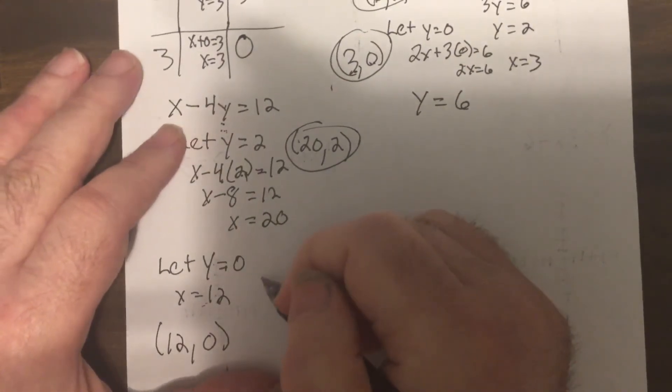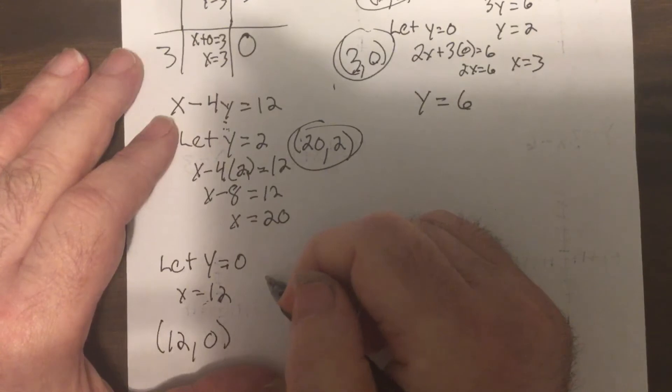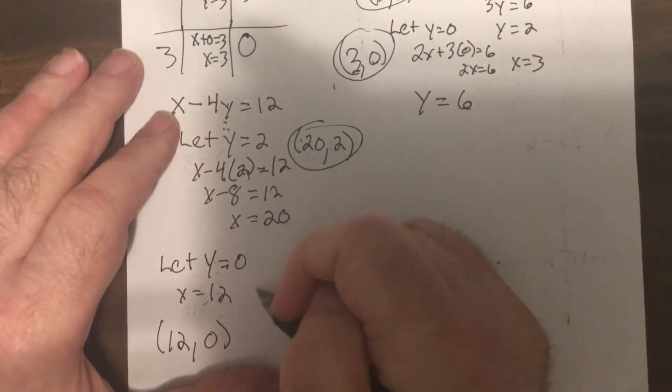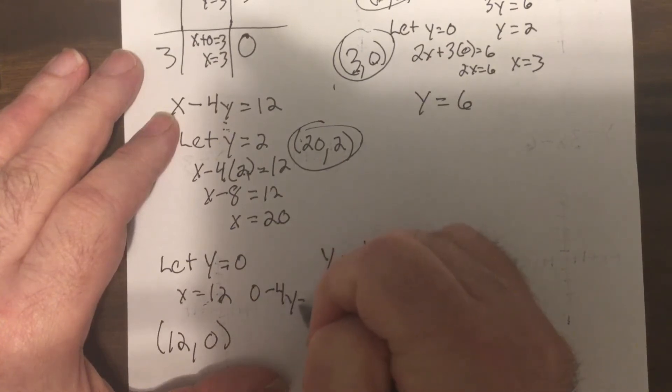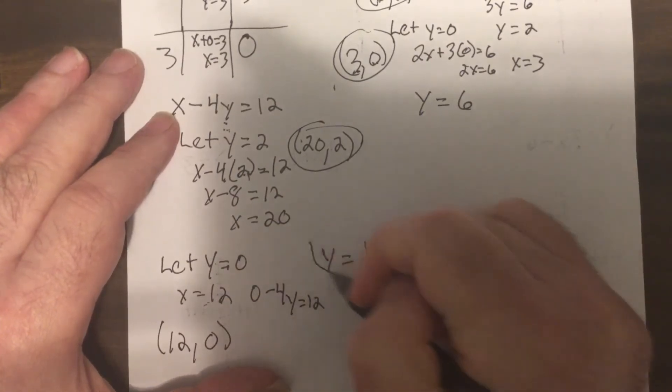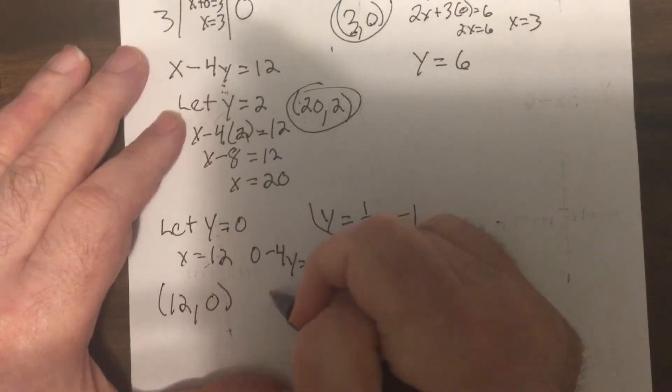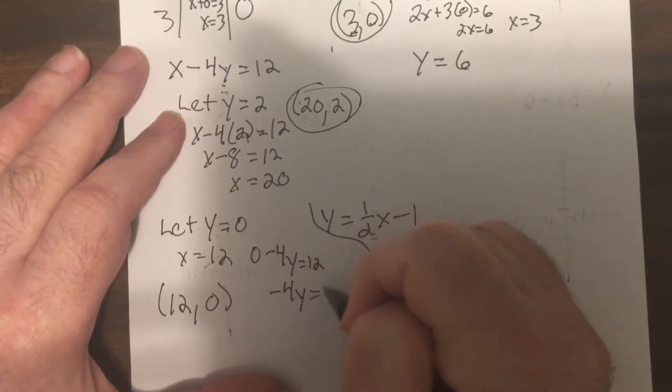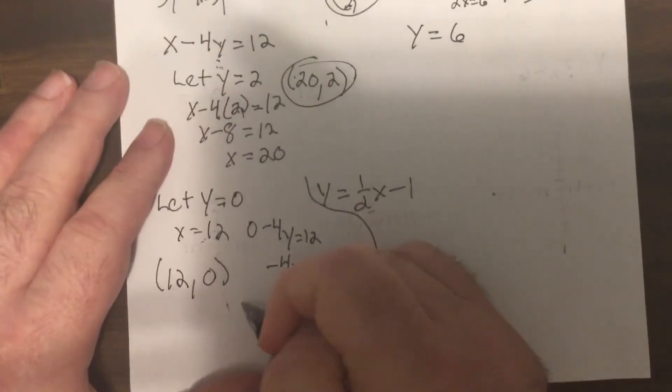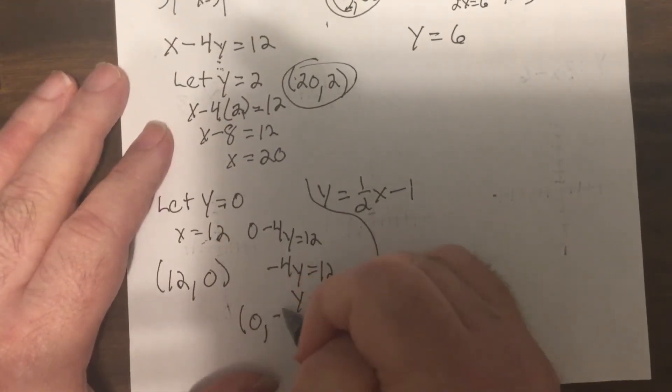Now I'm gonna do this kind of quick. Put zero in, this drops out, X equals twelve, so it'd be twelve, zero. And my X intercept is twelve. Notice the ordered pair that corresponds with that. Then let's find the Y intercept. So I'll put zero in for X. So I'd have minus four Y equals twelve, so Y equals negative three, so it would be zero, negative three.